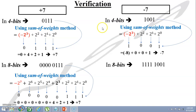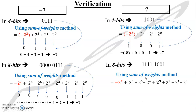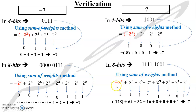With minus 7, when we changed it to 8 bits, we had an extension of the most significant bit, which was our sign bit. In minus, it was 1, and we had a 1 appended in this case. Now we are going to verify that this still equals minus 7, and we have extended it to 8 bits by using the sum of weights method, keeping the most significant bit weightage equal to minus, and adding the rest of all the bits.